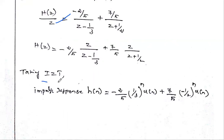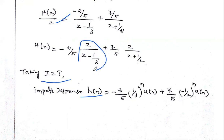Since we want the impulse response h(n), which is the inverse Z-transform of H(z), we take the inverse Z-transform of the partial fraction result. We get: −(2/5) times the inverse Z-transform of z/(z − 1/3), which is (1/3)^n · u(n).